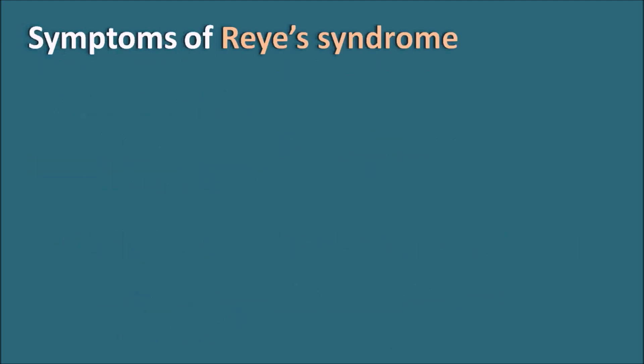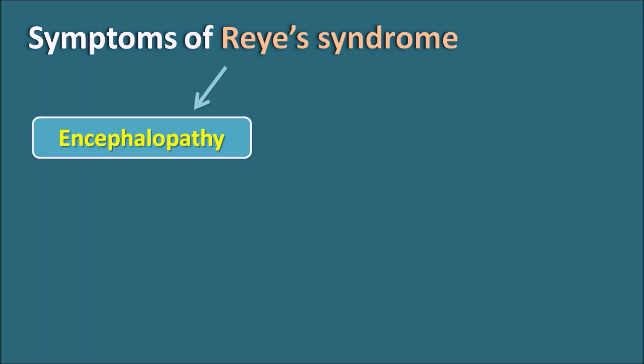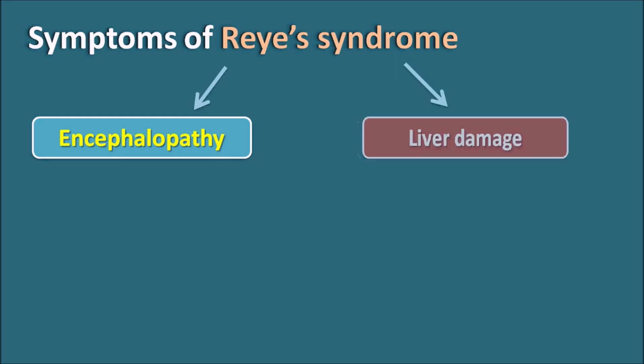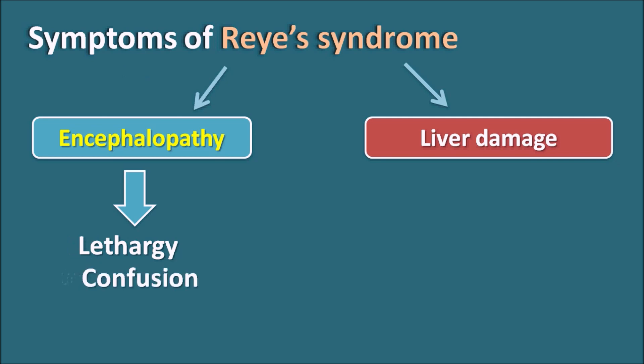Reye's Syndrome particularly affects two organs: the brain and the liver. It mainly produces encephalopathy — enlargement of the brain — as well as liver damage. The encephalopathy can cause symptoms in patients such as lethargy, confusion, seizures, and coma.